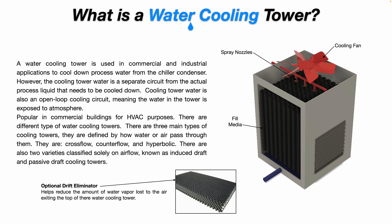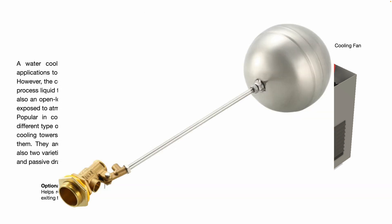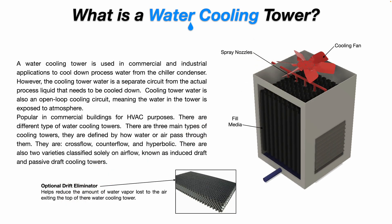Water cooling towers have a float valve. When the float drops down, it opens a valve allowing fresh water to enter the basin of the cooling tower to top off the water level. As the float rises back up, it shuts the valve and maintains a constant water level in your water cooling tower.